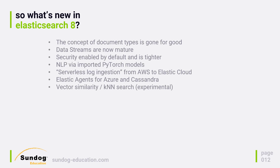They've also introduced vector similarity and KNN search, tagged as experimental but pretty cool. Vector similarity lets you take two documents and compute how similar they are to each other using the overall corpus of data in your index. For example, with a database of books, you could automatically compute how similar one book is to another based on their attributes. With KNN search, you can search for the K most similar documents to a given document — say the 10 most similar books, using a K of 10. This has interesting applications for recommendations and recommender systems. Vector similarity was actually introduced during the 7.x run.